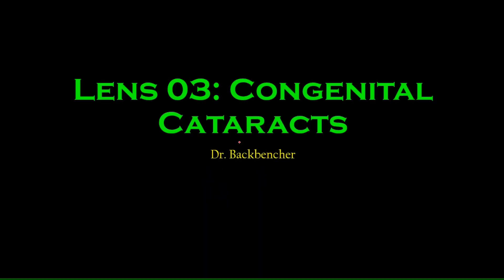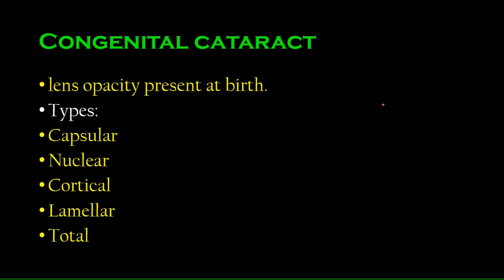Today we will be talking about a type of cataract called congenital cataract. Congenital cataract is opacity of the lens which is present at birth. Depending upon the location of where the cataract occurs in the lens, it is divided into a few subtypes.